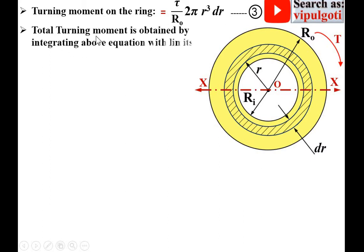Now to find the total turning moment of the entire hollow section, we obtain it by integrating the above equation with the corresponding limits.